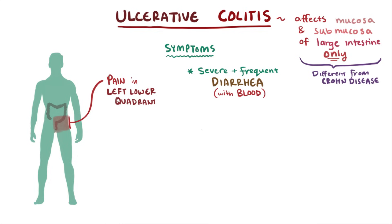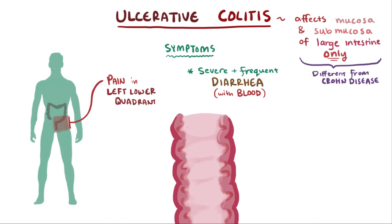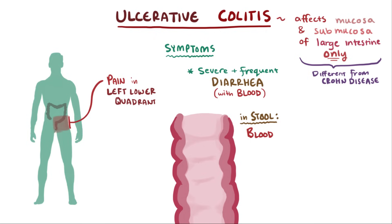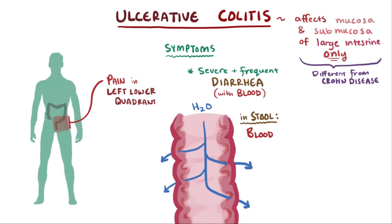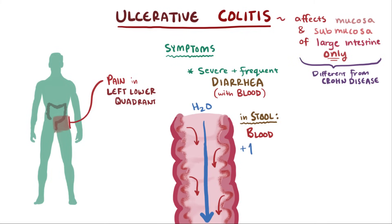As the mucosa and epithelium are destroyed, blood and serum might be released into the lumen, which contributes to the blood seen in the stools. Additionally, one of the main jobs of the large intestine is absorbing water. So as these cells are destroyed, the large intestine can't perform this function as efficiently and ends up letting too much water through, contributing to diarrhea.